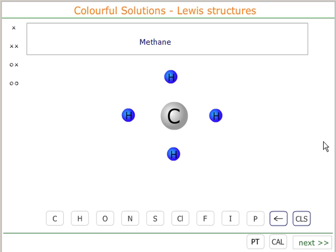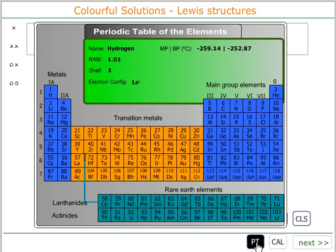Now carbon is in group 4 of the periodic table, so that means it has four electrons in its outer shell.